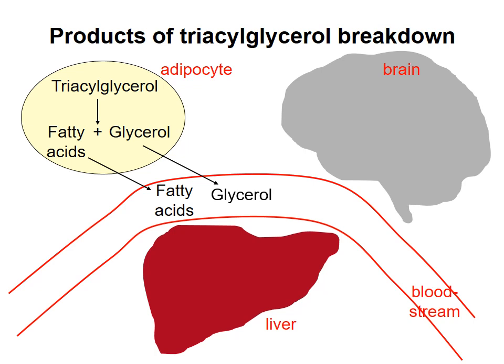Glycerol produced in the breakdown of triacylglycerols is also released into the bloodstream. The liver takes it up and converts it to glucose through gluconeogenesis. The liver does not use the glucose for itself, but exports it to try to maintain blood glucose at an adequate level. This is particularly helpful for the brain, since glucose is the brain's preferred source of fuel.